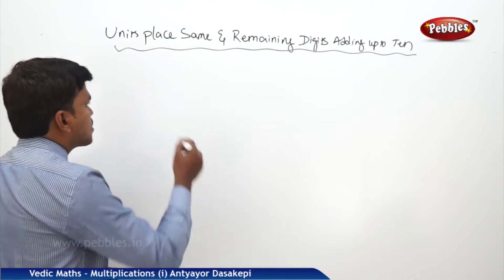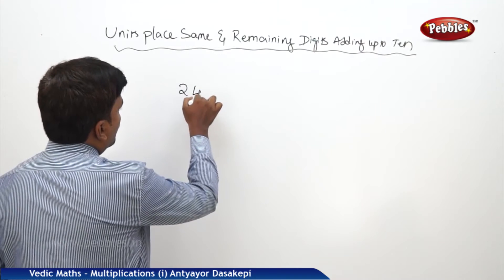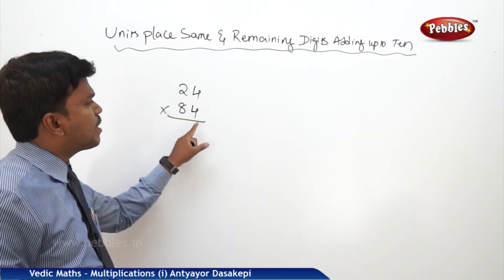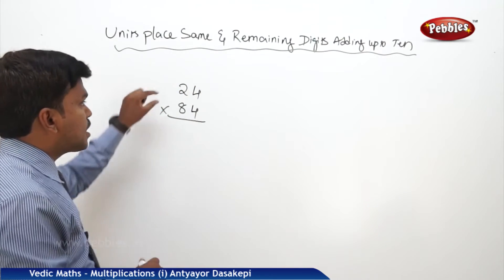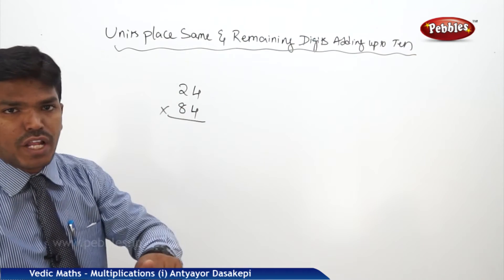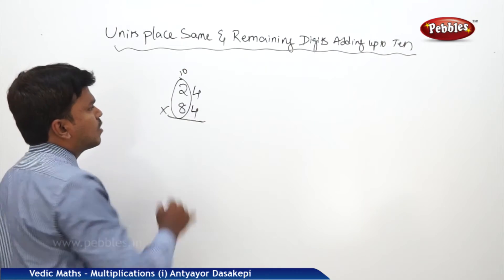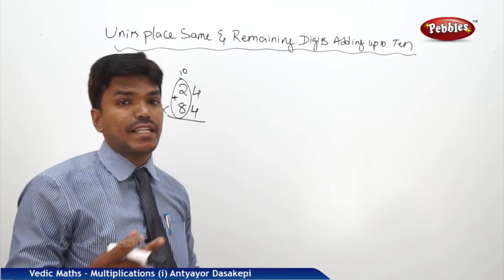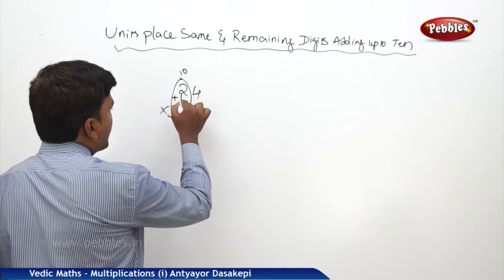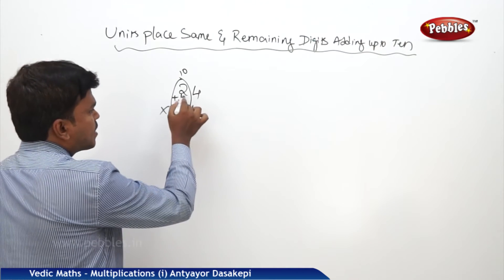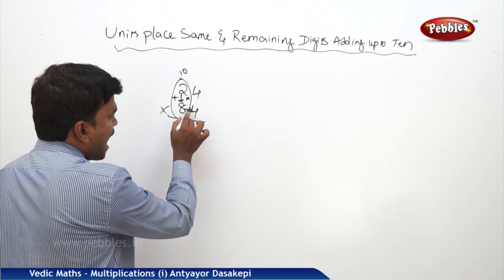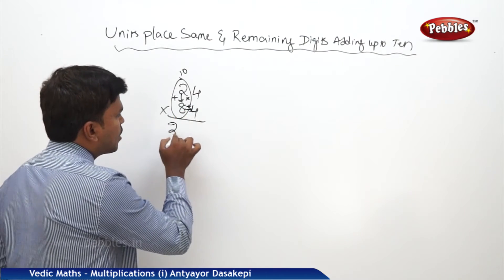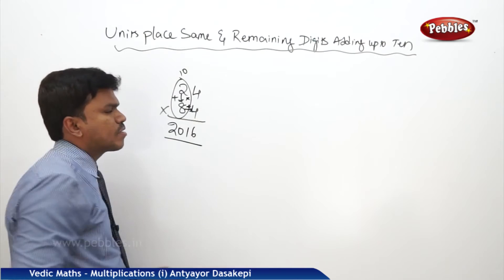Let us see one example. Suppose I want to multiply 24 into 84. The units place is 4 and 4 — both are same. The tens place: 2 and 8 are adding up to 10. Both conditions apply. Now, 2 times 8 is 16. Add the right side digit: 16 plus 4 equals 20. Write 20 here. Then 4 times 4 is 16. So your answer is 2016.